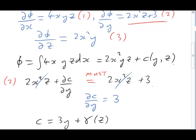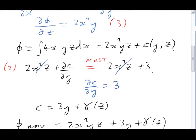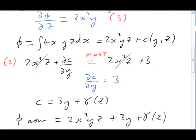Let's now write out our potential again using this version of c. So now phi is 2x squared yz and we've found plus 3y that comes from the c of yz plus the gamma of z. Equations 1 and 2 are now satisfied. That leaves number 3, which conveniently is at the top of the screen.